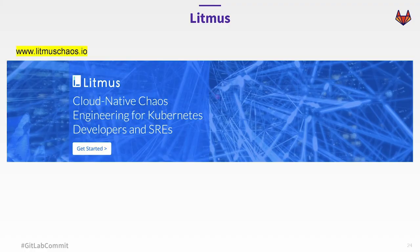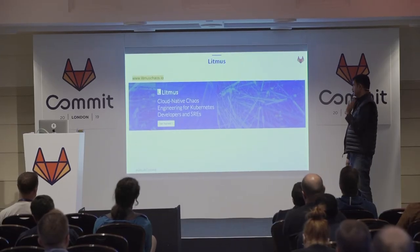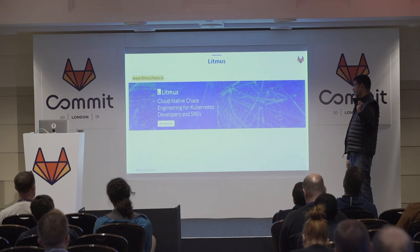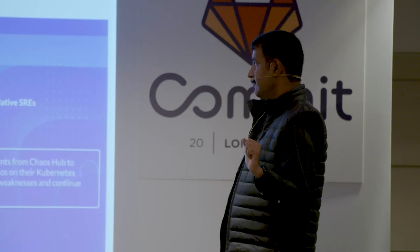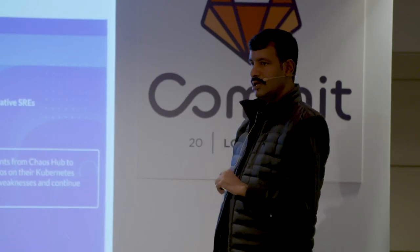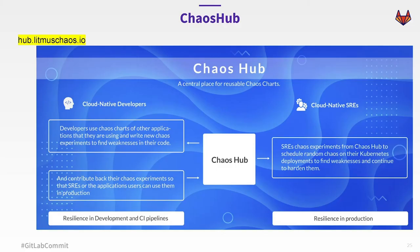This is a good concept. Is there something available that does that already? Yes, that's Litmus. Our website is litmusChaos.io. The main pitch is cloud native chaos engineering for Kubernetes developers and SREs. We have come up with another fantastic concept called Chaos Hub.